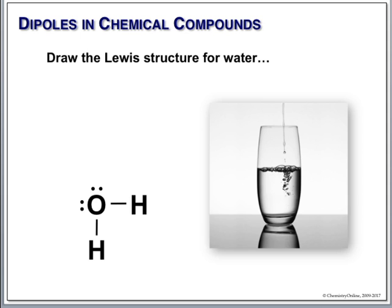We use those lone electrons to form covalent bonds — this is our Lewis structure for water. Checking the octet: oxygen in the middle has 2, 4, 6, 8 electrons around it — that's a full octet. Hydrogen, because it's in the first period, can only accommodate 2 electrons, and each hydrogen is sharing 2. So this is a good structure.